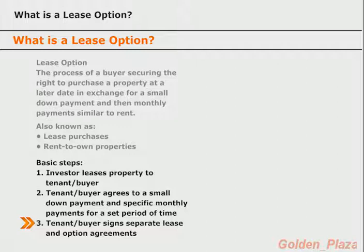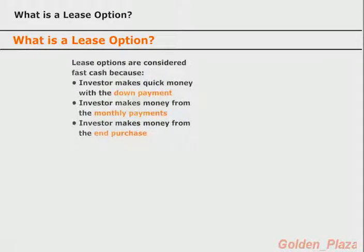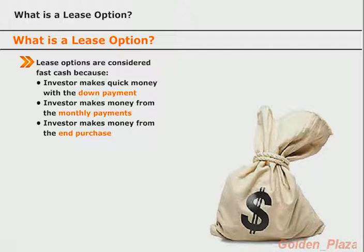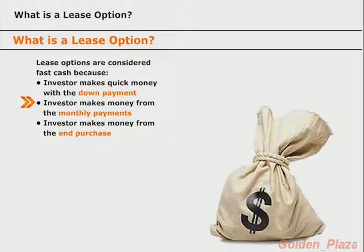The basic outline of a lease option is that an investor obtains control over a property and then leases it out to a tenant in exchange for a small down payment and specific monthly payments over a set period of time. At the same time, the tenant enters into a separate option agreement that gives them the right to purchase the property at the end of the lease period, typically for a predetermined price. Lease options are considered a cash flow investing strategy because of the many places an investor can make money — at the beginning from the down payment, from monthly installments, and from the end purchase.